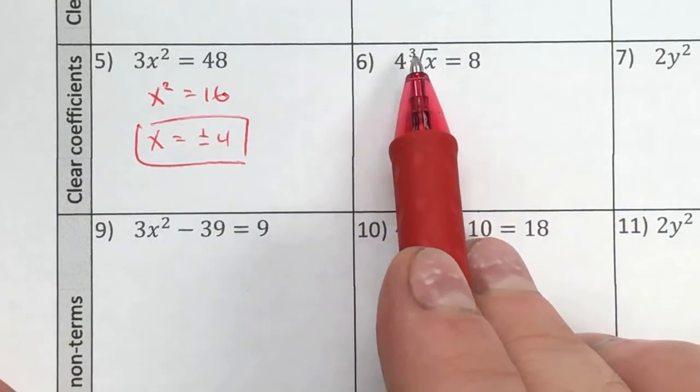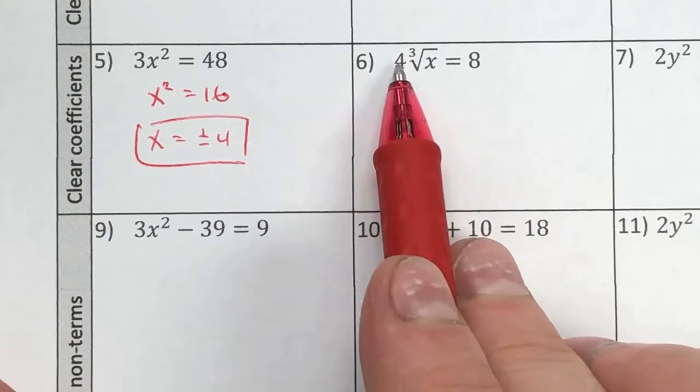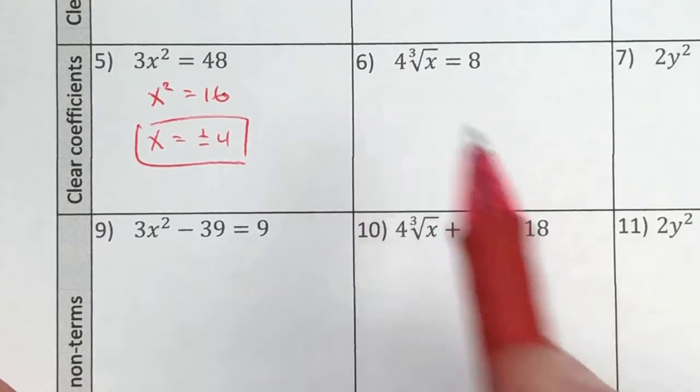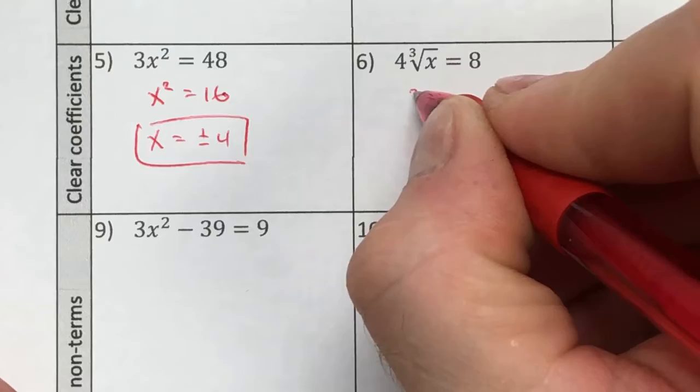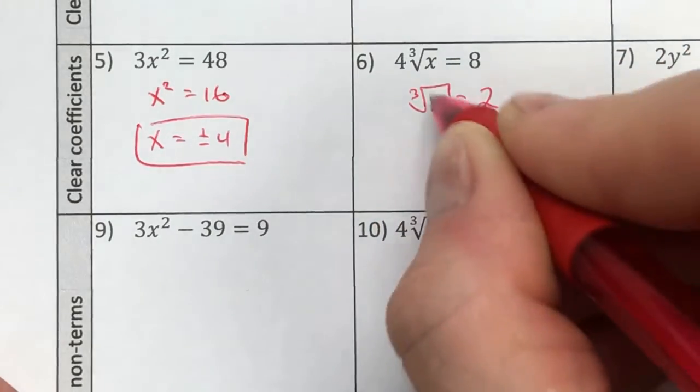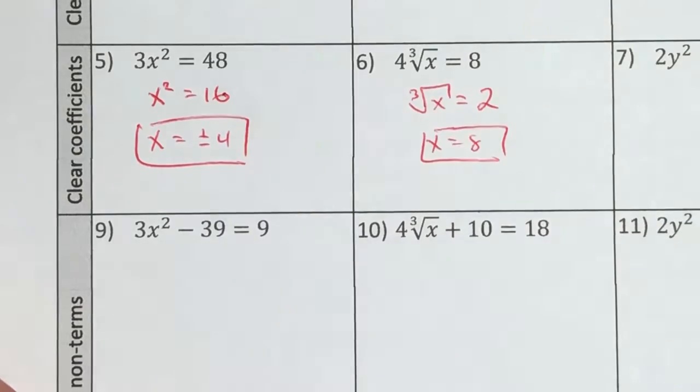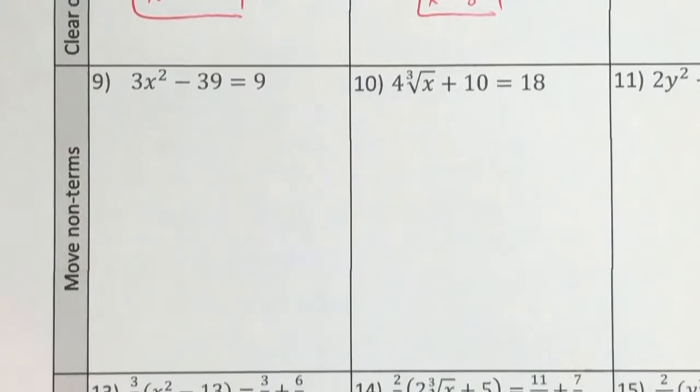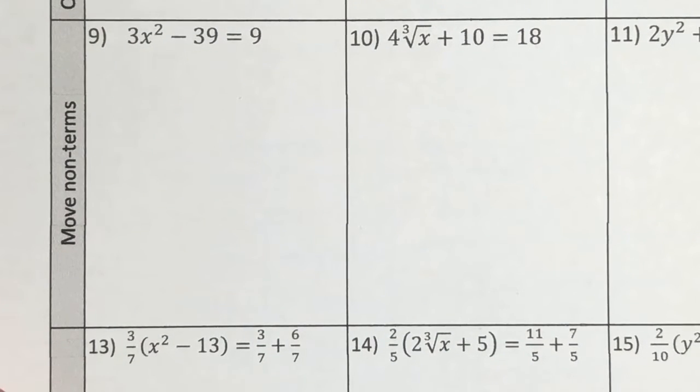Same thing right here. I could either get rid of the root or the power or the coefficient. So to get rid of the coefficient, I'm going to divide both sides by four, which leaves me with the cube root of x is equal to 2. And then I go ahead and cube them and I say x is equal to 8. Now again, these rules can be broken, but we're doing the generic approach.